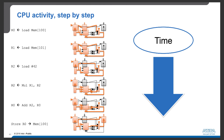Eventually, we have the final instruction to store the result from R0 to memory location 100. The value in R0 is read, passed through the ALU, and stored into memory using the store unit. As we can see, these six instructions are executed one by one, illustrated by a time axis going from top to bottom. During execution, we can also observe that certain functional units are idle at various points.